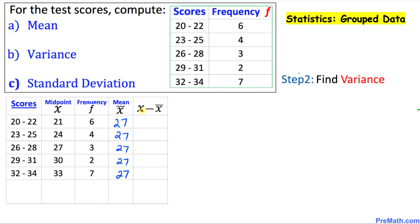In the fifth column we find the difference x minus x̄. We have x equal to 21 and x̄ equal to 27, so 21 minus 27 gives negative 6. Likewise, 24 minus 27 is negative 3, then 0, then 3, and then 6.